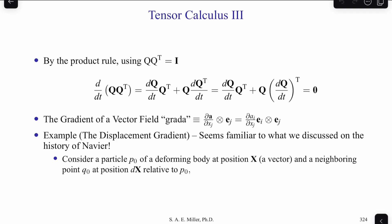We can also use the gradient of a velocity field, the so-called grad u. That would be ∂u/∂x_j ⊗ e_j = ∂u_i/∂x_j e_i ⊗ e_j. This is the displacement gradient, which may seem familiar to what we discussed in the history of Navier-Stokes equations earlier in the class.